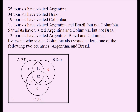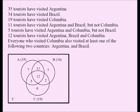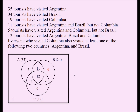The only region left is outside all three circles — the tourists who didn't visit any of the three countries. There were 51 tourists total, so we subtract the sum of all seven numbers inside the circles from 51. The four Argentina-circle numbers sum to 35, and adding the remaining regions: 9 plus 2 plus 0 gives 46 total inside the circles.